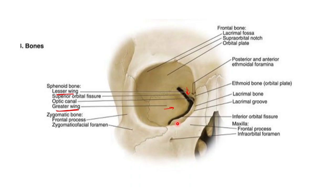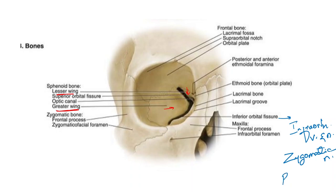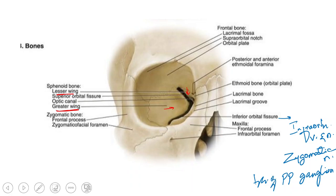The inferior orbital fissure allows the passage of three important structures: number one, the infraorbital vessels and nerves; number two, the zygomatic nerve; and number three, the orbital branches of the pterygopalatine ganglion. The inferior orbital fissure thus transmits the infraorbital vessels and nerves, the zygomatic nerve, and the orbital branches of the pterygopalatine ganglion.